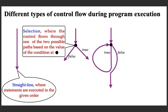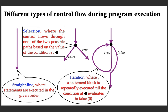The third type is iteration, which means a statement block is repeatedly executed until the condition evaluates to false. In the C programming language, false is represented by the numeric value zero — there is no Boolean data type. Numeric value is used to represent true and false: false means zero, true means non-zero. Until a condition becomes false, this part of the program needs to be executed again and again. This is called looping or iteration.